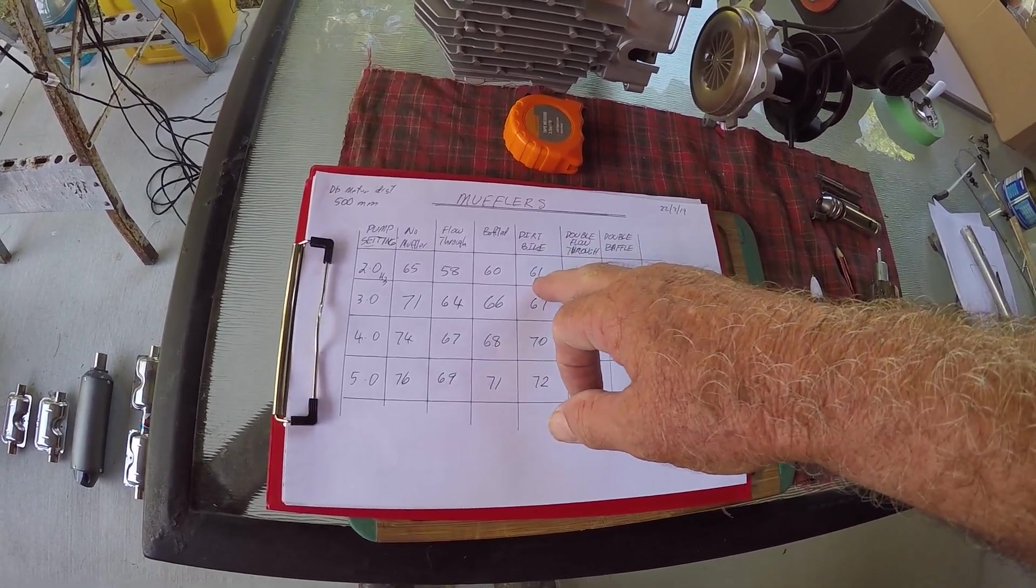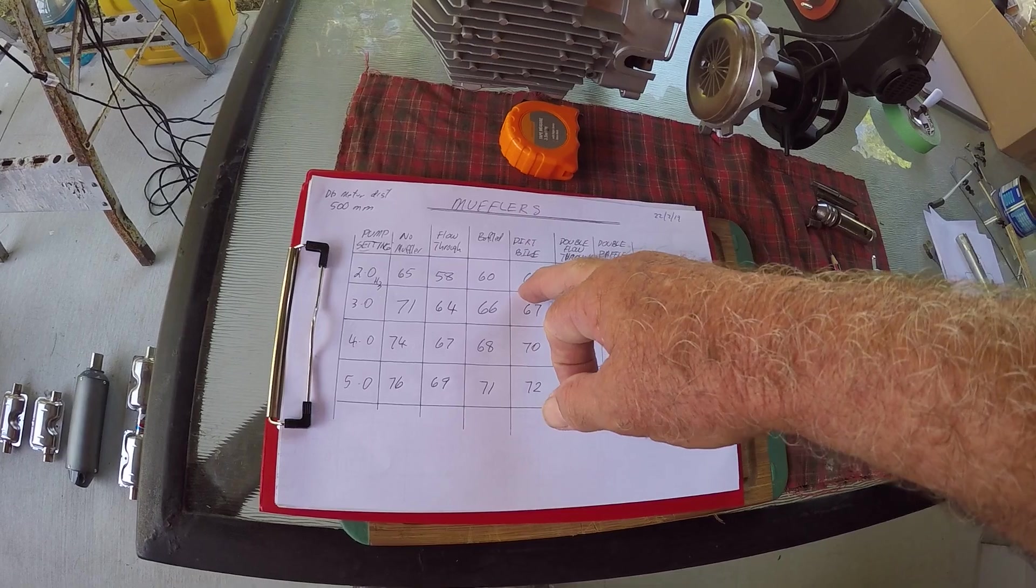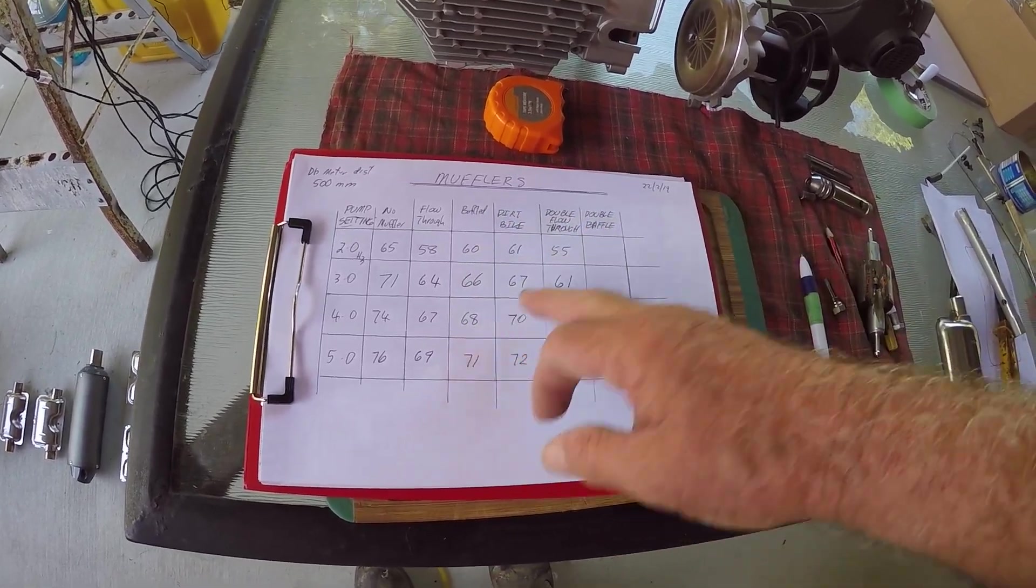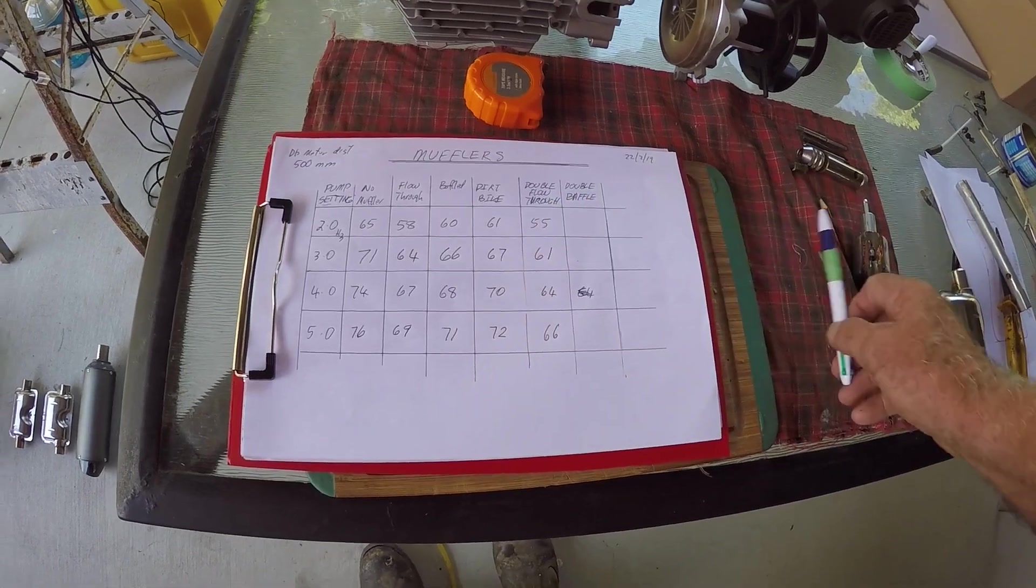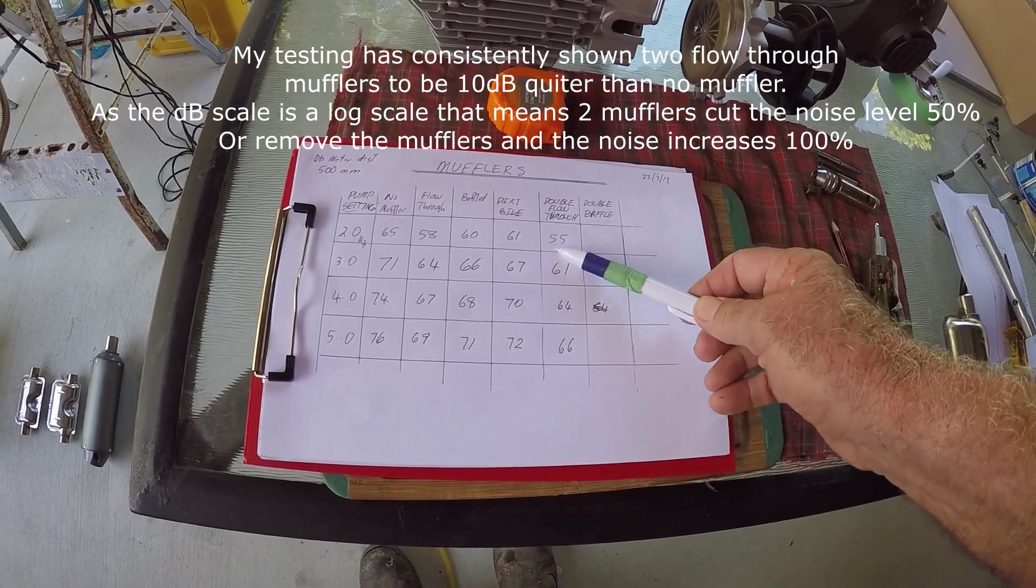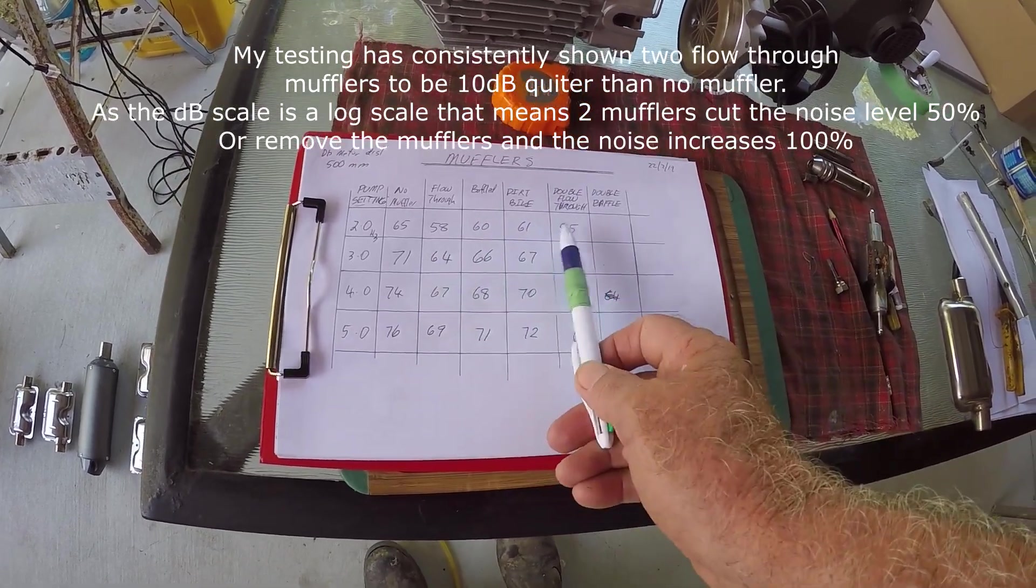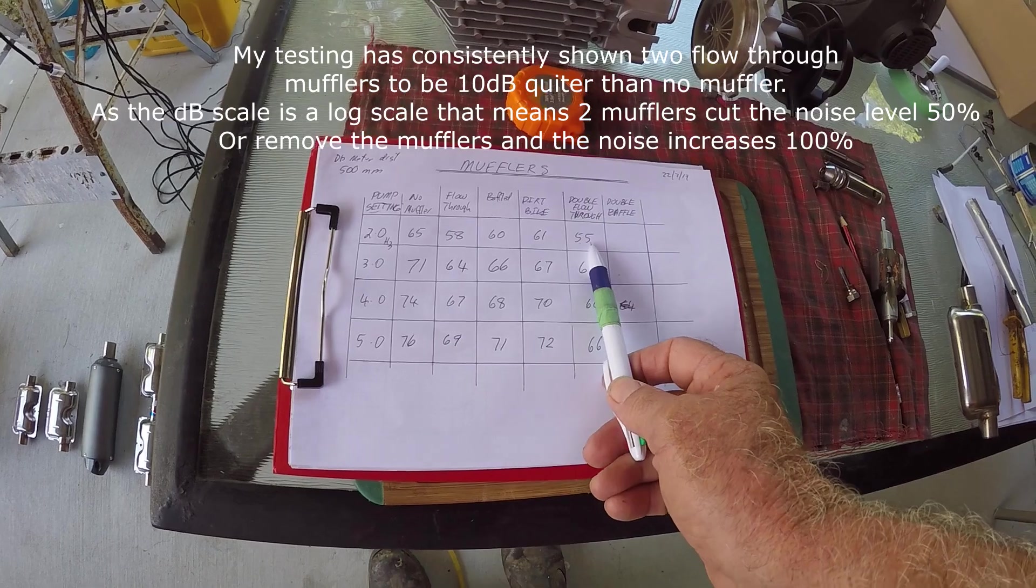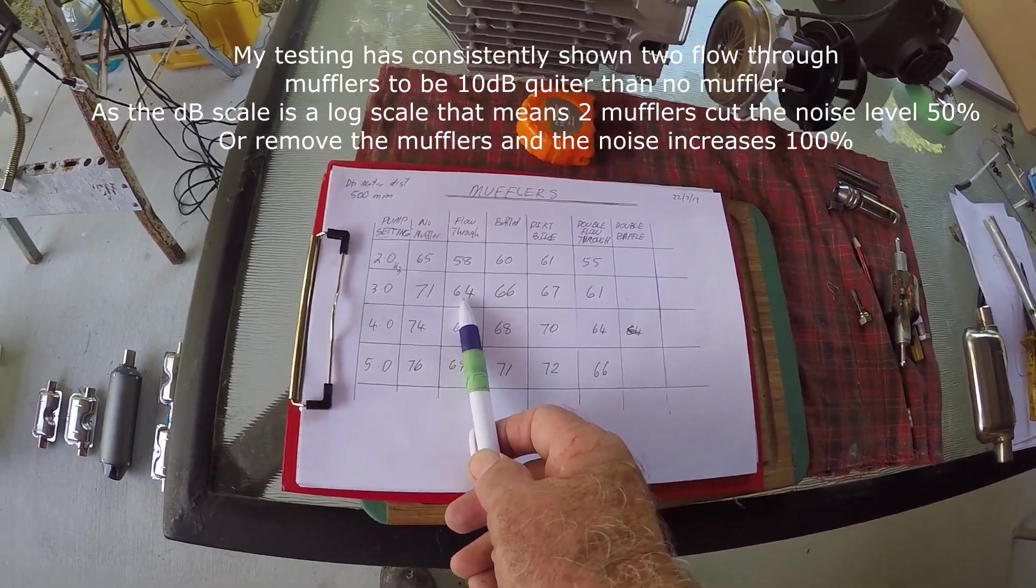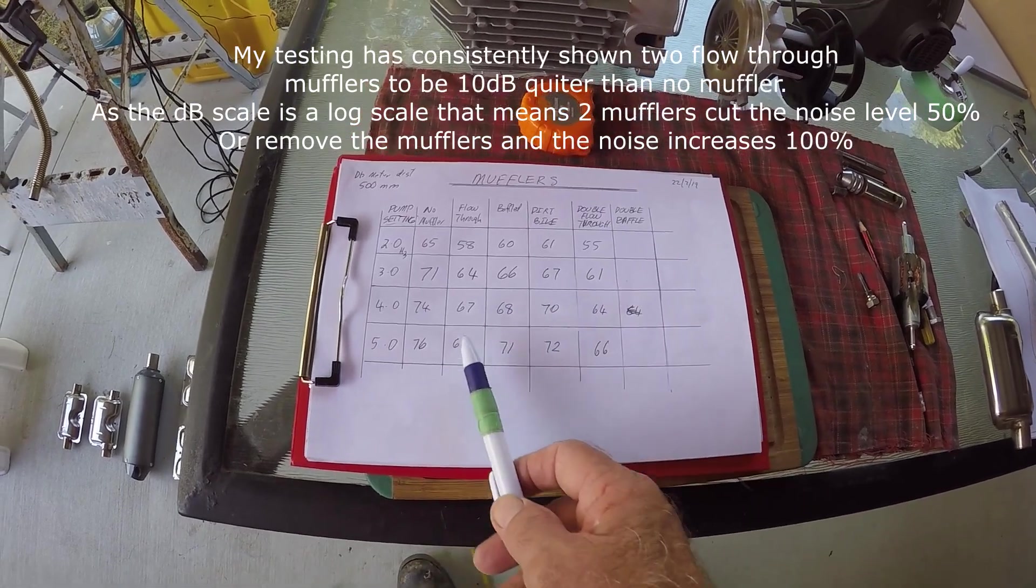I haven't created a very tight seal to go under the exhaust and it would go a little bit less and it'll probably come out about this level. But this is the surprising one. If you run a double flow through muffler you significantly reduce the noise. So you've gone from 58 to 55 with the flow through, you put two flow throughs in and you go from 64 to 61.